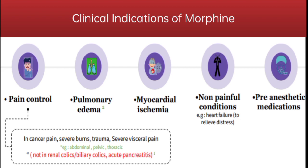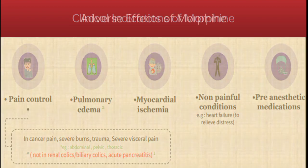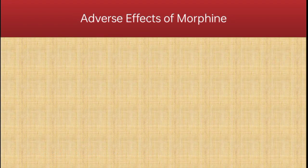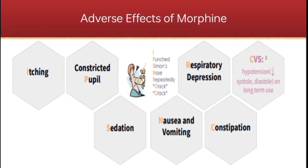The adverse effects of morphine include itching, constricted pupils, sedation, nausea and vomiting, respiratory depression, constipation, and hypotension when used for a longer period of time.